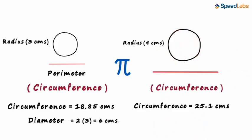For this circle, we get the circumference as 25.1 centimeters. And the diameter will be twice its radius which equals 8 centimeters.